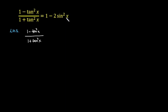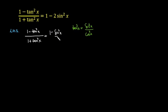When I see this whole identity, there is a tangent on the left hand side and there is a sin on the right hand side, so somehow I have to replace this tangent with sin. We know that tangent x is equal to sin x over cos x, and we need the square, so we square both sides. Replace tangent square x with sin square x over cos square x. So this expression can be written as (1 minus sin square x over cos square x) over (1 plus sin square x over cos square x).